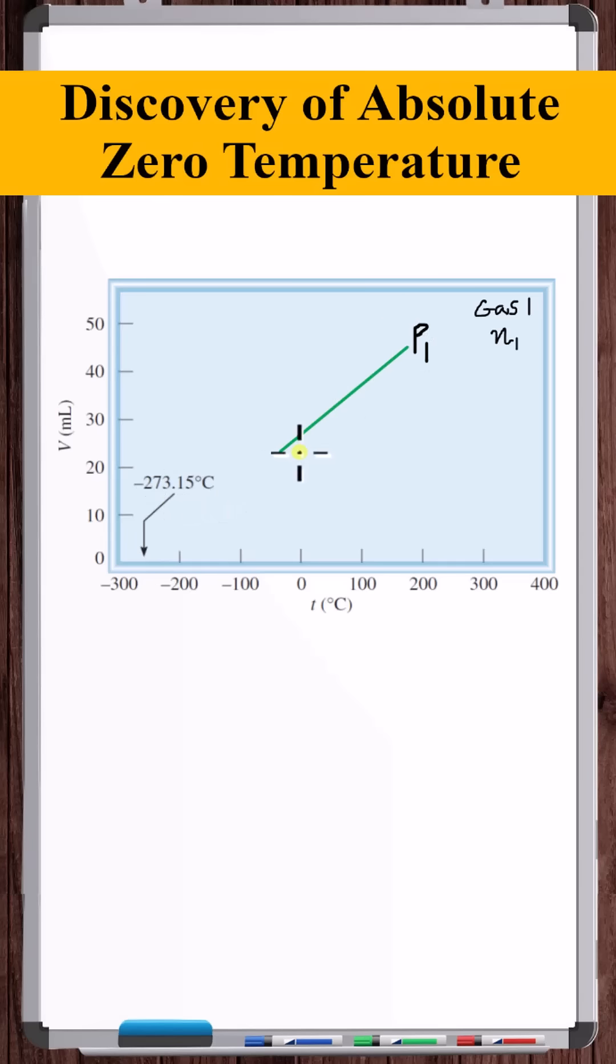So a nice linear relationship. We go to another pressure, P2. Same result, this nice linear relationship. We go to a third pressure, P3. Same result.